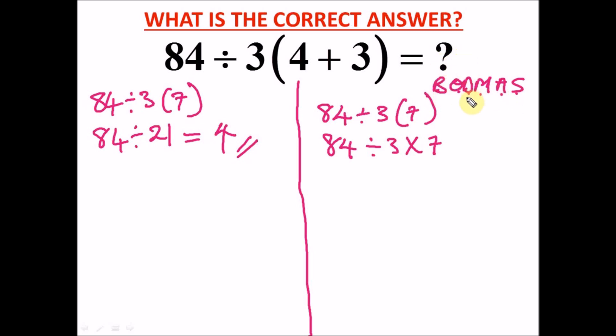So we have to carry out division. We have to say 84 divided by 3, and what is 84 divided by 3? 84 divided by 3 is 28. Then drop your times 7, you can see that.